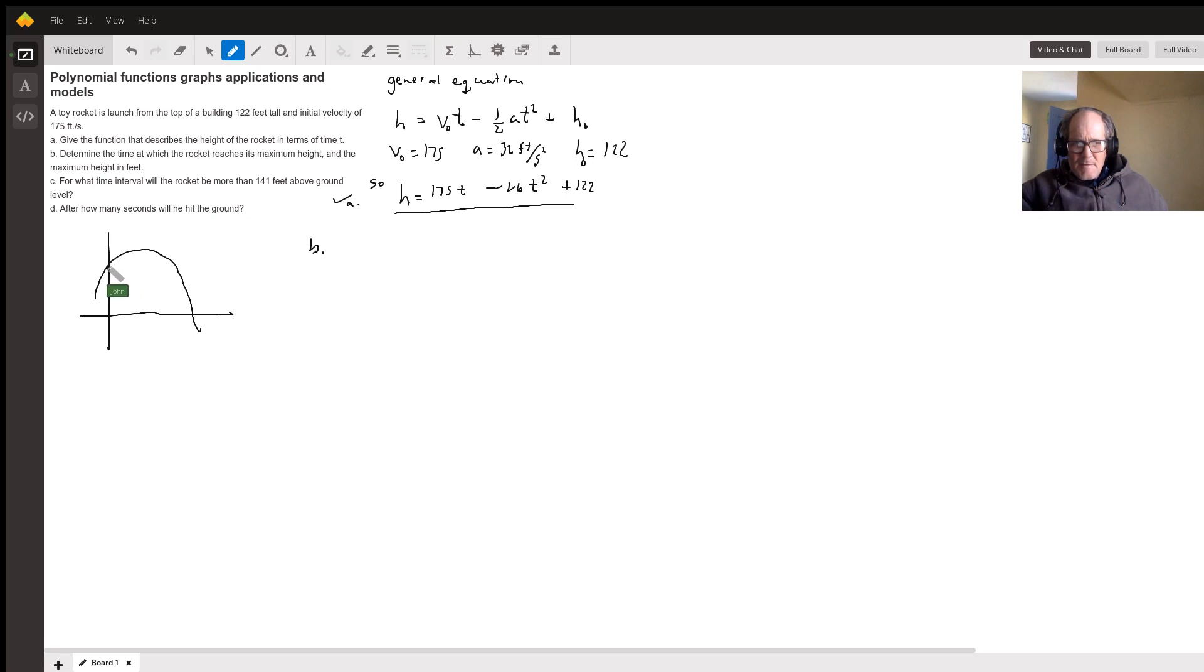Well, let's just think about this. If this is 122 and this is 122 right there, then this middle number is your maximum height because a parabola is symmetrical. So all I have to do is find this time right here,